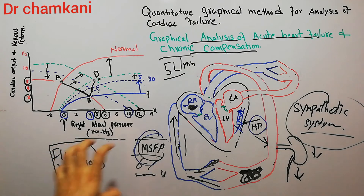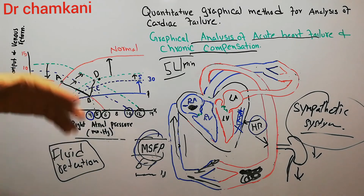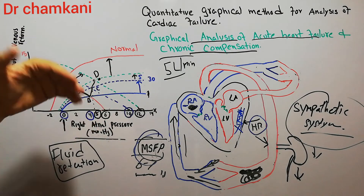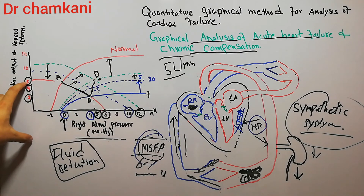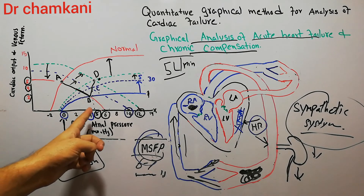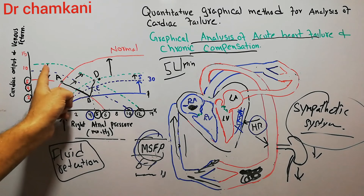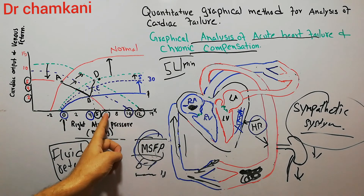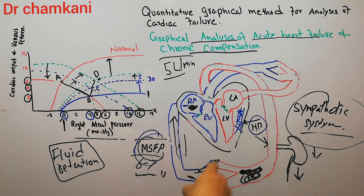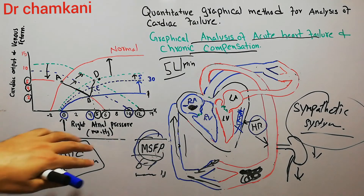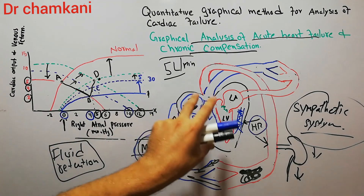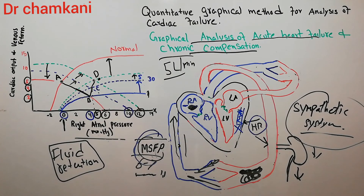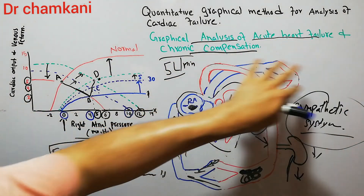With further compensation through renal fluid retention, less urine is formed, more fluid accumulates, and the cardiac output and venous return curves both shift upward to meet at Point D, where cardiac output returns to the normal five liters per minute. However, right atrial pressure is now around 6 mmHg and mean systemic filling pressure has increased to 12 mmHg. If further recovery of the heart occurs, cardiac output can increase further, but this depends on the type of pathology inflicted on the heart.